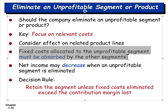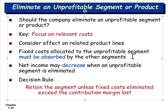Fixed costs allocated to the unprofitable segment must be absorbed by other segments. If those fixed costs continue even after eliminating the product or segment, they get absorbed by existing products. In fact, net income could go down if you eliminate an unprofitable segment. The decision rule is: retain the segment unless the fixed costs eliminated exceed the contribution margin loss.